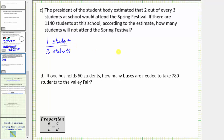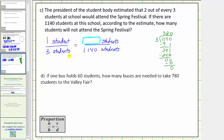Therefore, to determine how many students will not attend out of one thousand one hundred forty, we want an equivalent ratio comparing the unknown number of students that won't attend to the total number of students, which is one thousand one hundred forty. Three times three hundred eighty equals one thousand one hundred forty, so we multiply one by three hundred eighty as well. One times three hundred eighty is three hundred eighty, which tells us the estimate is three hundred eighty students will not attend the spring festival.